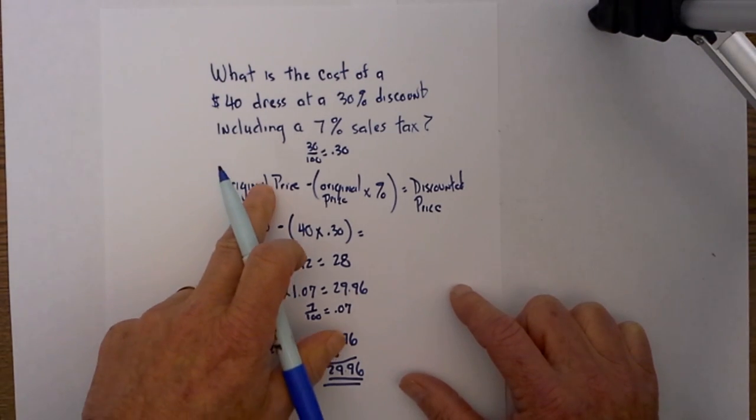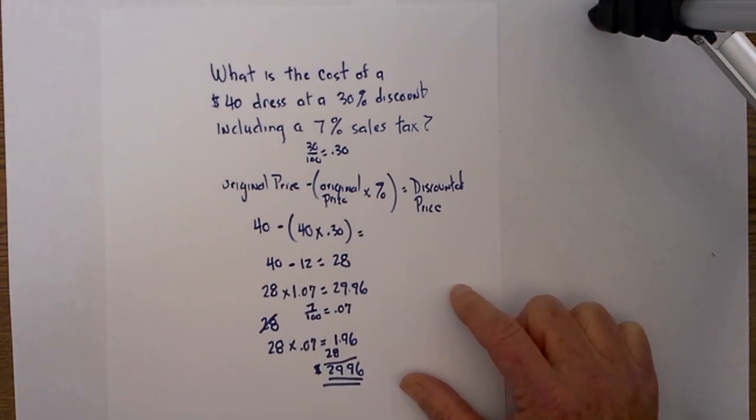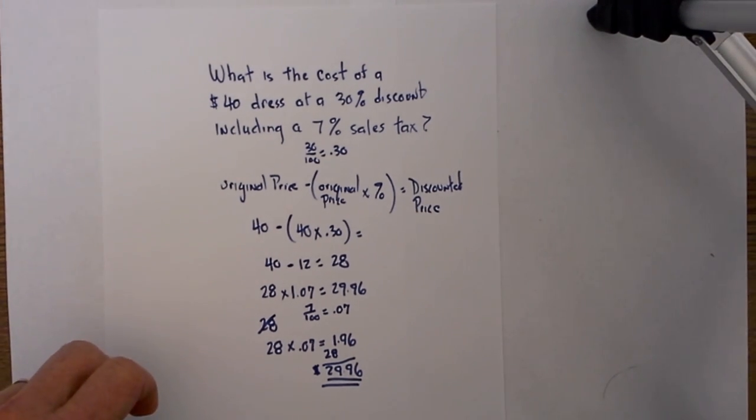Using this formula, original price minus original price times the discount equals discounted price. I hope that helps. Thanks for watching.